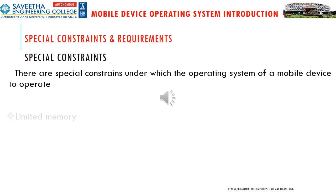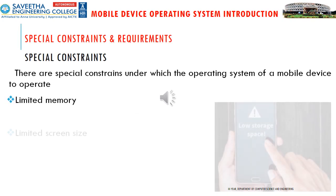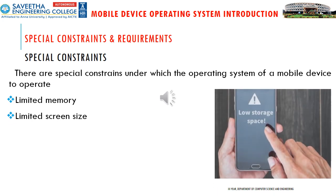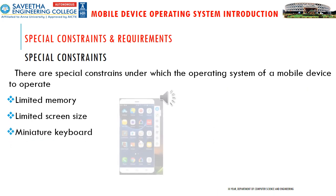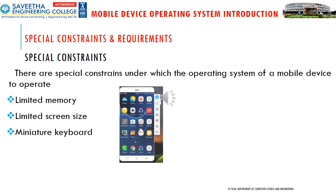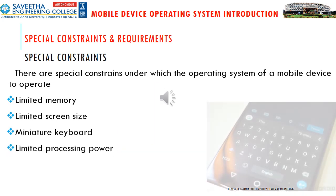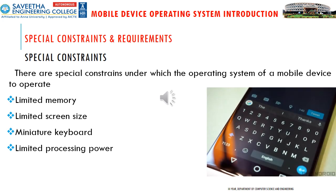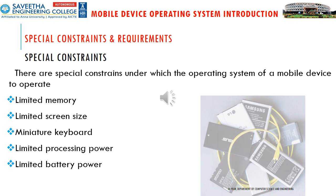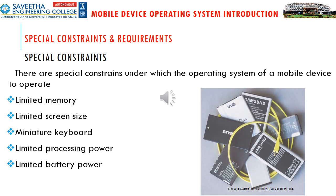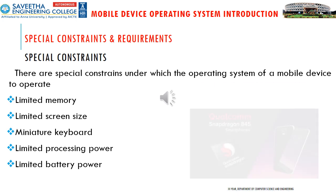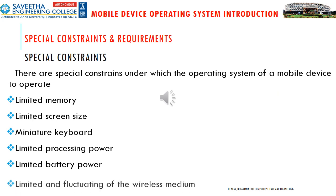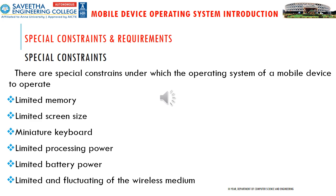There are special constraints under which the operating system of a mobile device should operate. Since it is a handheld device, only limited memory is available. Screen size is very small compared to a computer screen, and each mobile device screen size varies. Mobile devices have a miniature keyboard compared to a computer keyboard, limited processing power, limited battery power, and limited and fluctuating wireless medium connectivity.